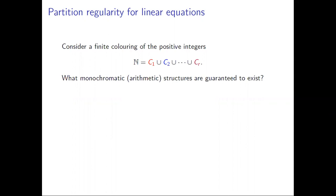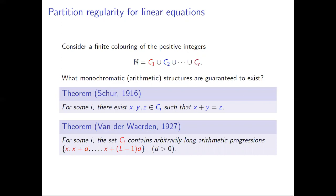I'll begin with partition regularity. Suppose we color the positive integers with finitely many colors. The question we want to answer is: what monochromatic arithmetic structures are guaranteed to appear? That is, what patterns can we find which are all of one color? Schur's theorem tells us that no matter how we color the positive integers, there must exist x, y, and z all the same color such that x plus y equals z.